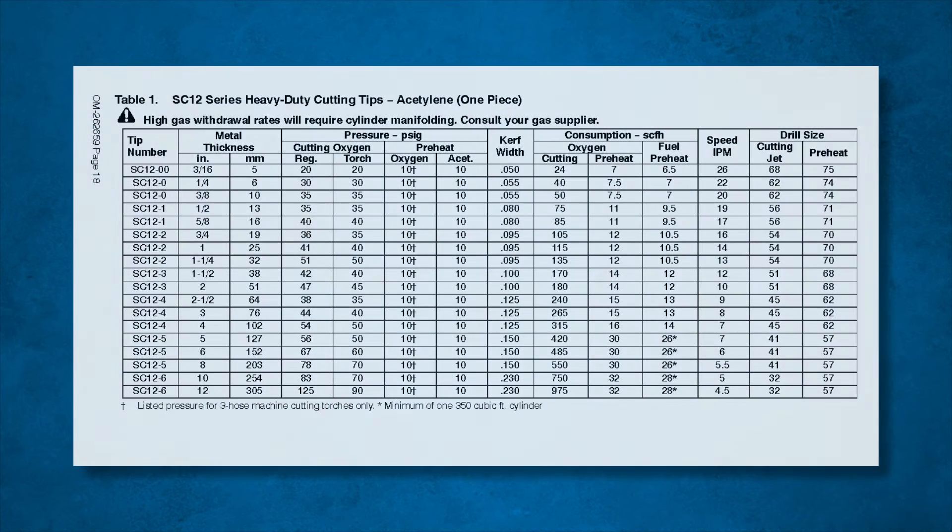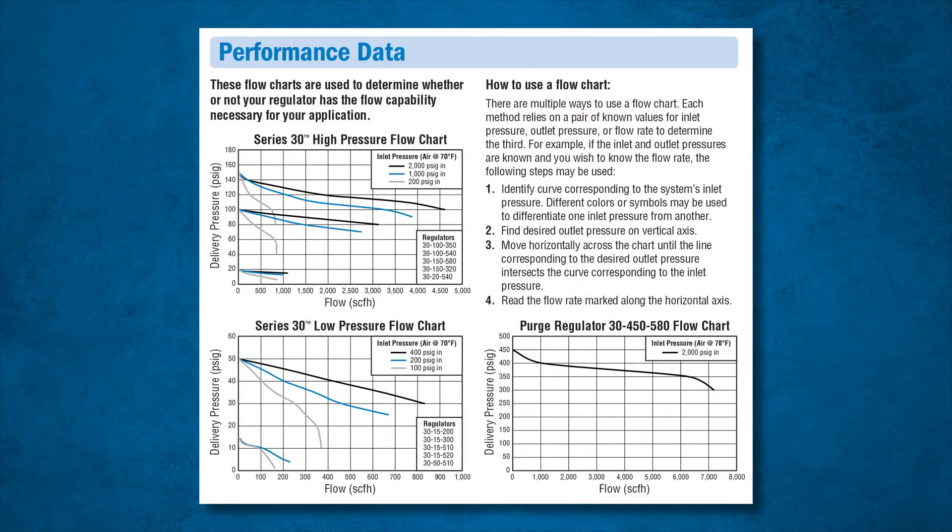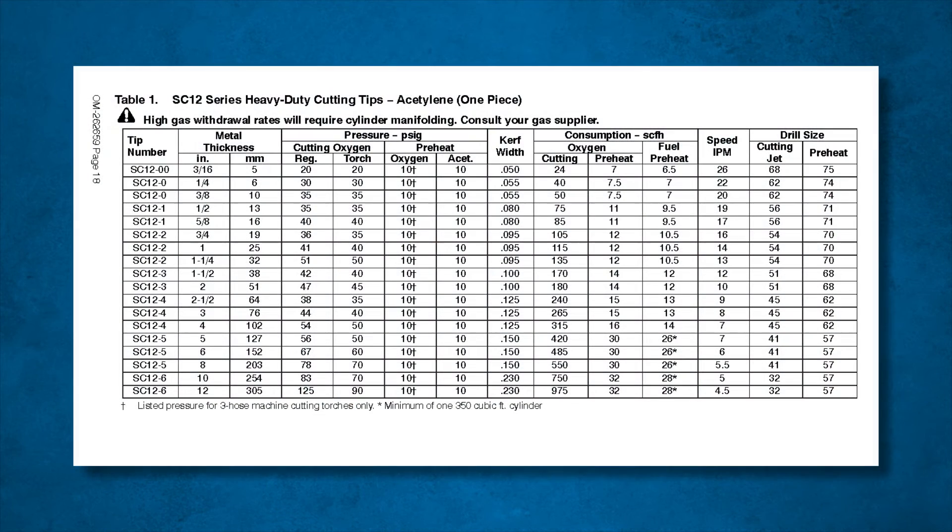Next, we will look at the flow requirements. You will also want to compare the flow requirements of your tip to the flow out of the regulator to determine if it has the flow capability necessary for your application. To find the flow of your regulator, you will want to look at its flow chart. For Smith regulators, this can be found on the spec sheet on MillerWelds.com. There are multiple ways to use a flow chart. Each method relies on a pair of known values, including the pressure and flow requirements for your application or tip.